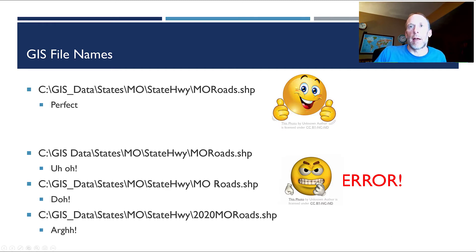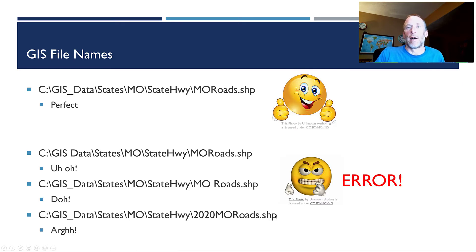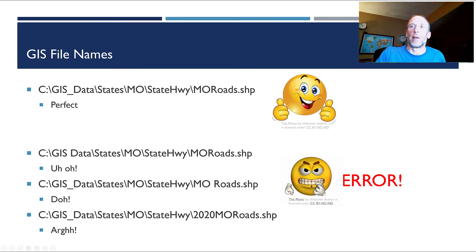Here are spaces in the file name. Once again, it doesn't matter whether it's in the file name or the folder — if there's a space anywhere in this path, it's going to be a problem for GIS. And the last one: no spaces, but we've got 2020 — leading numerals in the file name. Sometimes you can get away with this, but sometimes you can't. So it's better to just never do it so you don't end up frustrated.